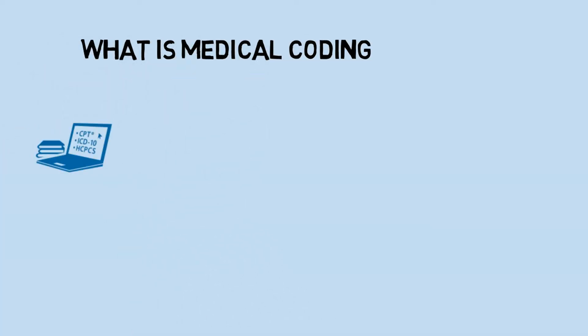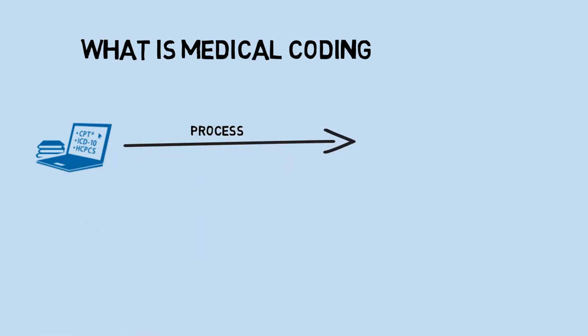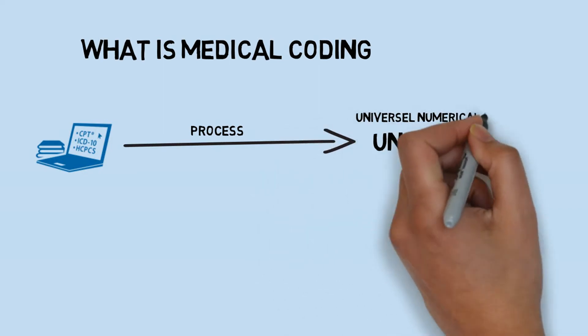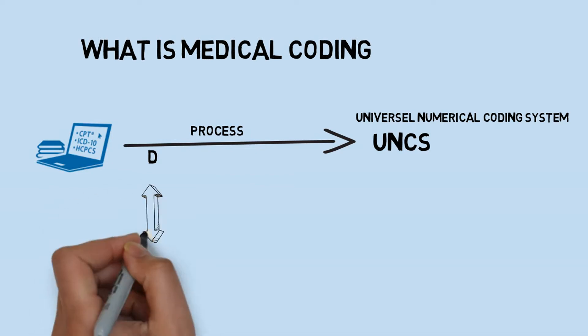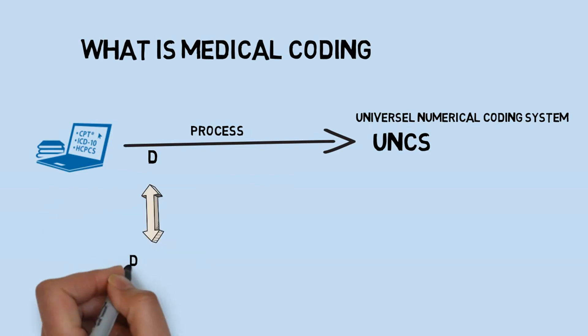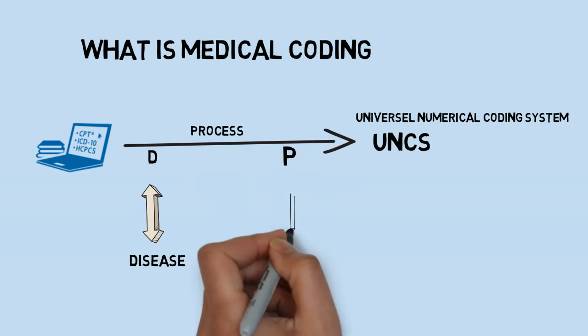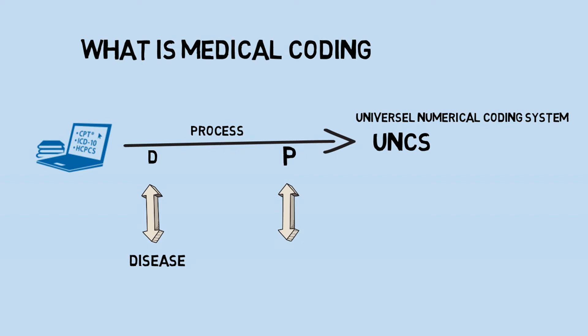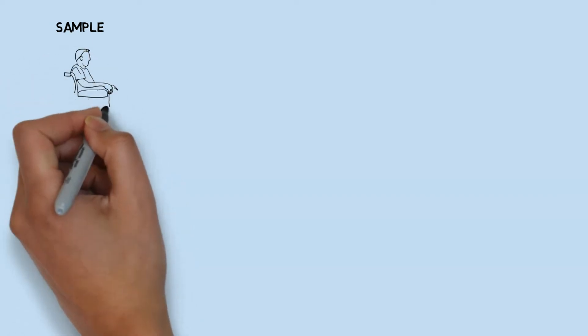Medical coding is a process where we convert diagnoses and procedures into a universal numerical coding system. Diagnosis means diseases and procedure means surgeries. The job is to thoroughly observe the case sheet, identify the managed diseases, managed injuries, and managed surgeries, and convert them into this universal numerical coding system.